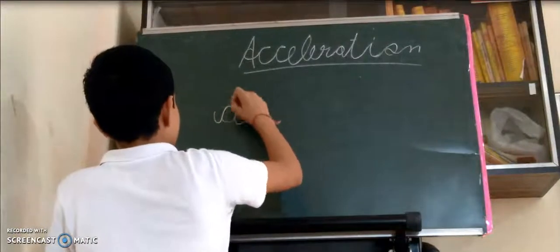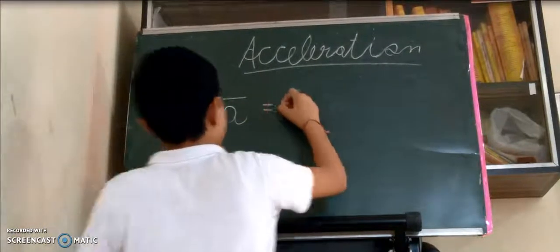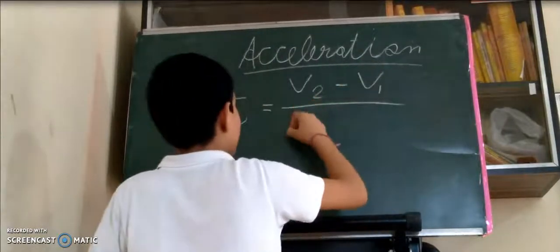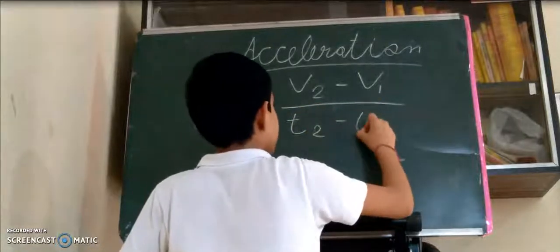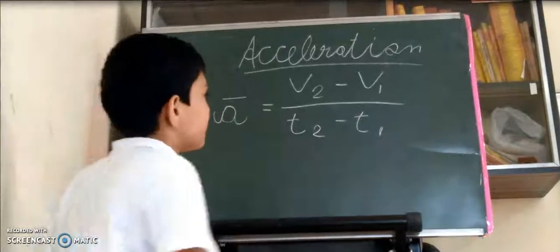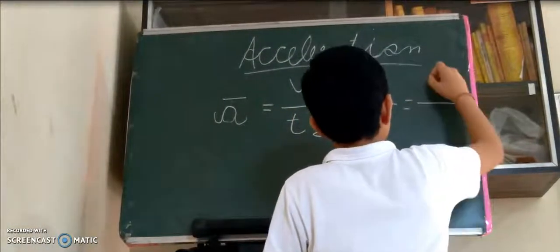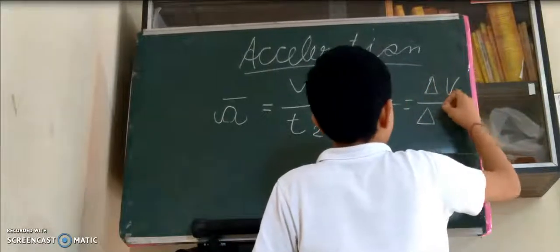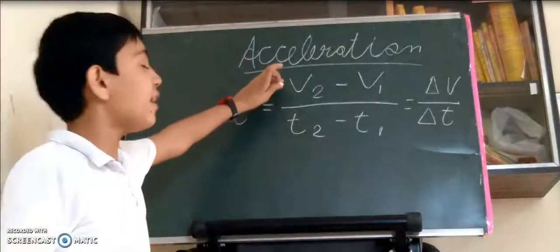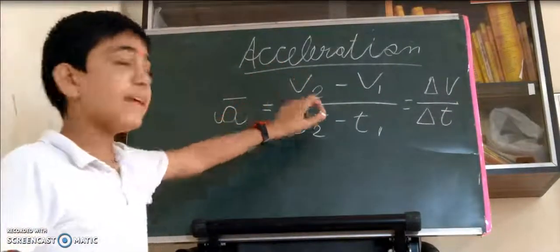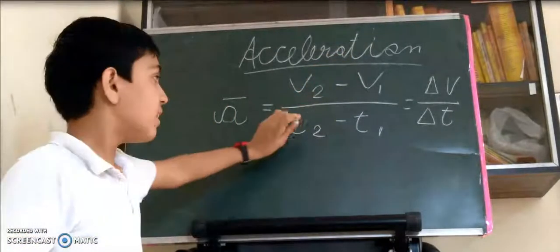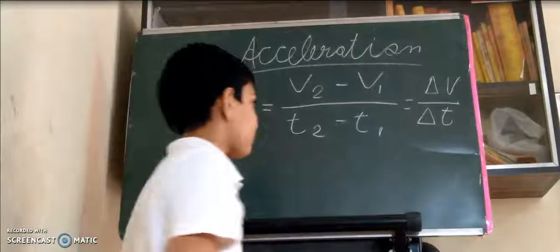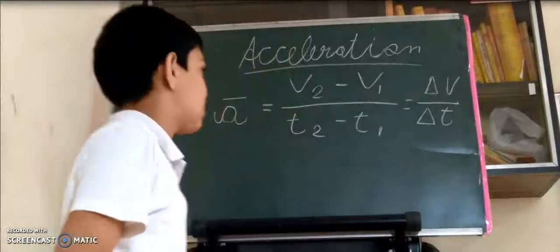The formula of acceleration is: a = (V2 - V1) / (t2 - t1), which equals ΔV / Δt. V2 is final velocity and V1 is initial velocity. t1 is initial time and t2 is final time. This is the formula of acceleration.